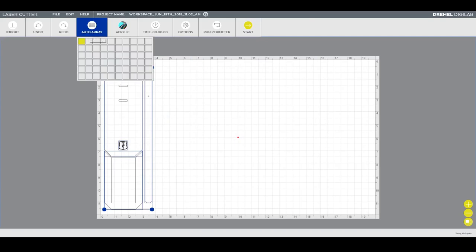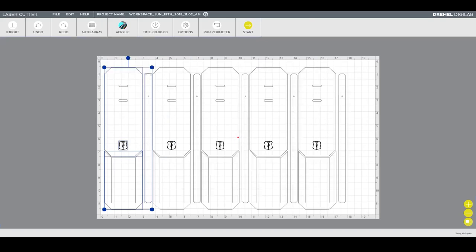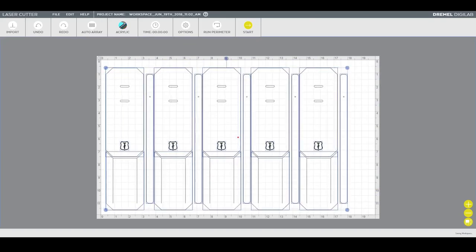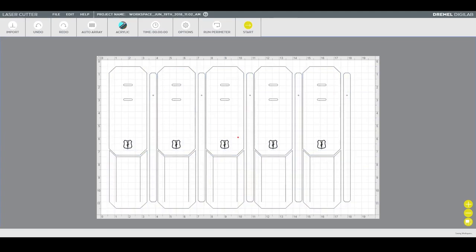We're making luggage tags to use up some of our scrap leather. We're gonna use this auto array feature to multiply all of the files and snug everything up so that we aren't wasting extra material. It's really going to not only enhance our line but bring down our overhead.